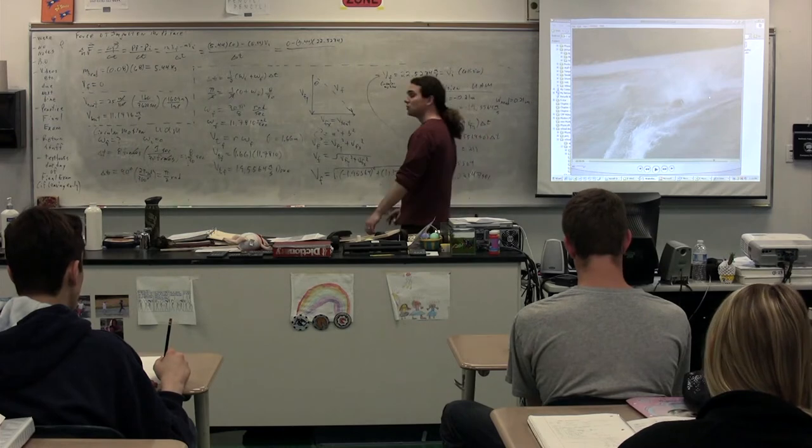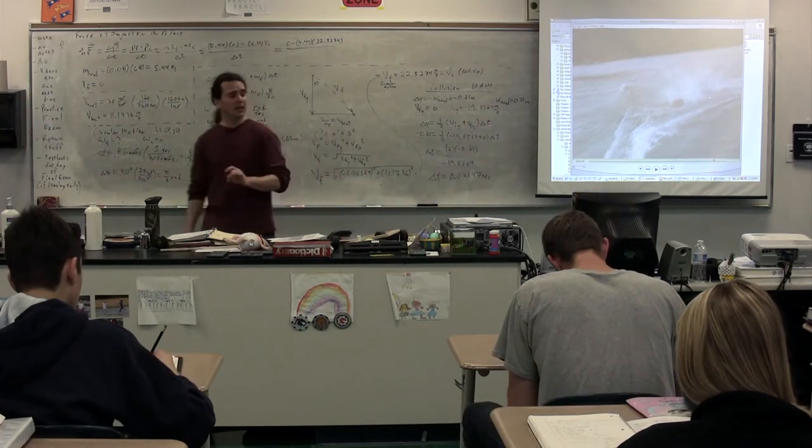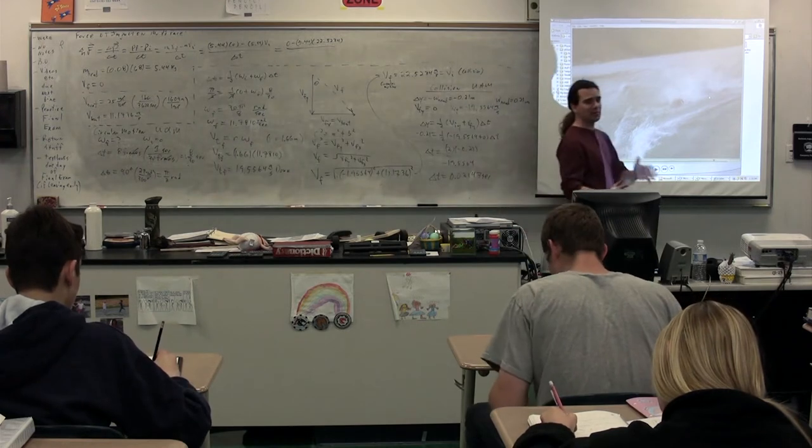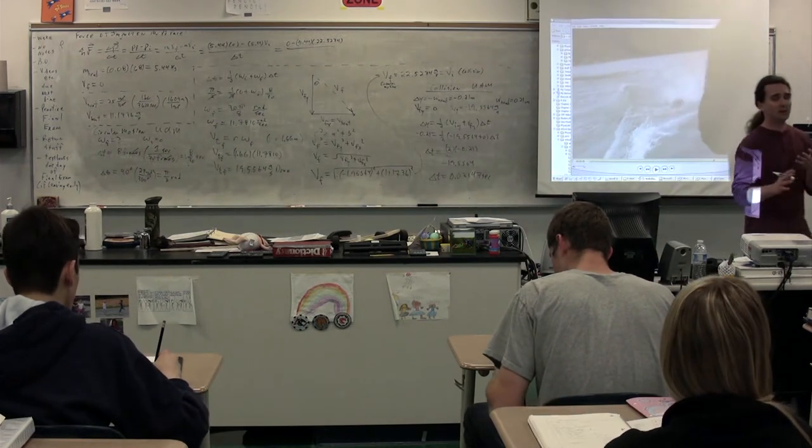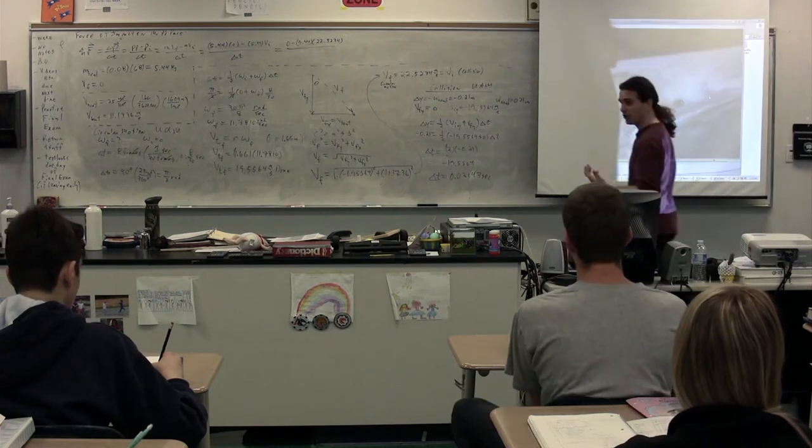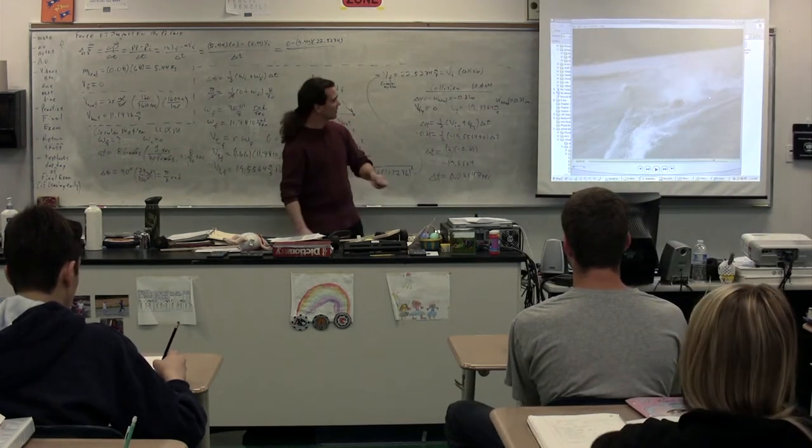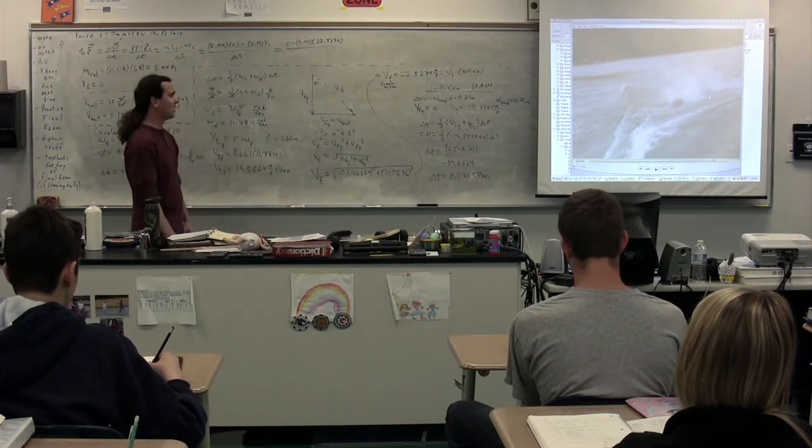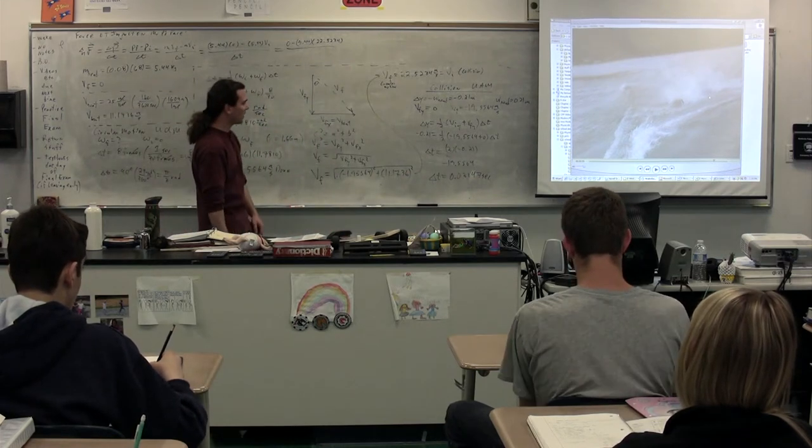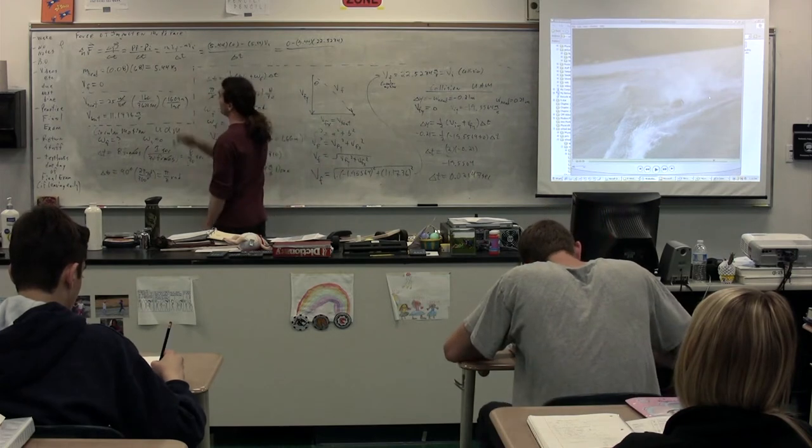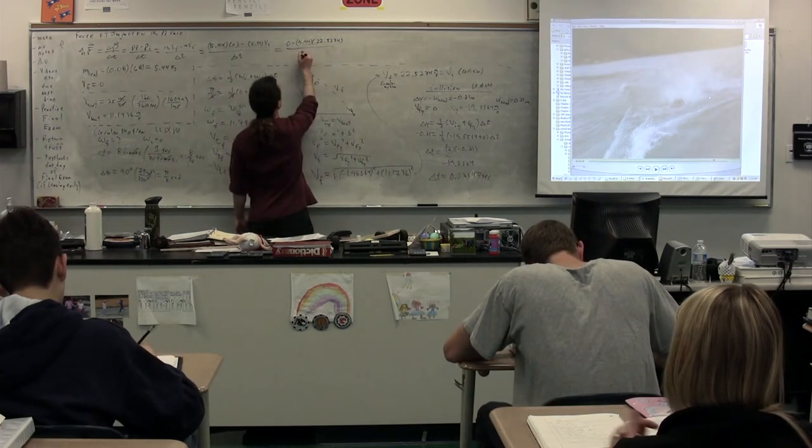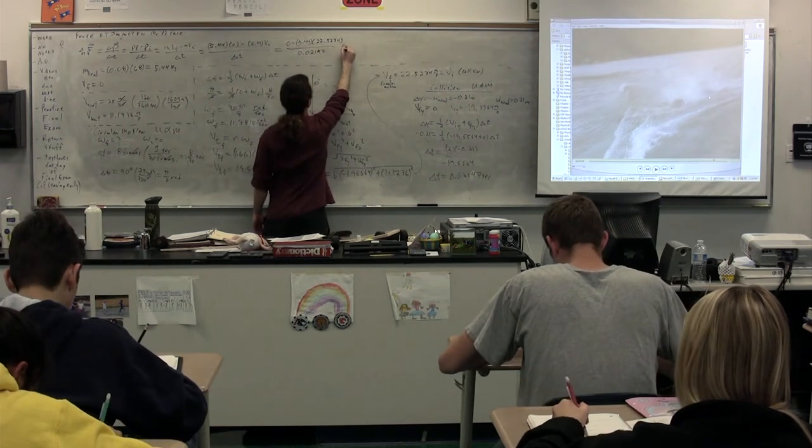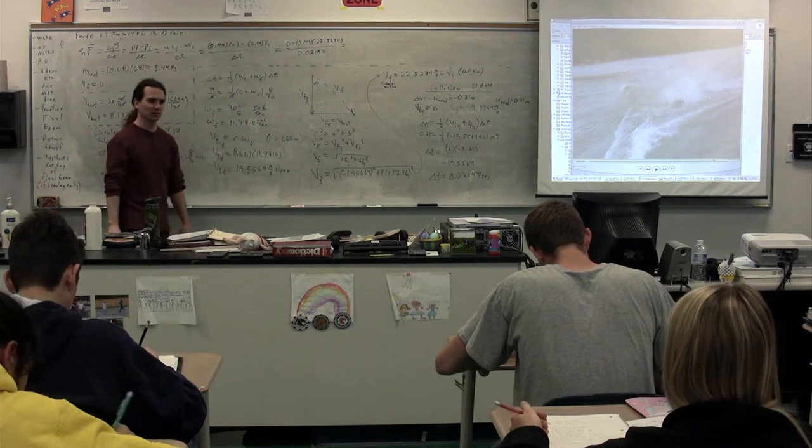So we estimated earlier that we could see from the video that the time of the collision actually was less than one-thirtieth of a second. One-thirtieth of a second would be 0.03 repeating seconds. So you can see that the time of the collision is clearly less than that, and now we have a much more accurate description of that time. So we can come back to our original equation for the net force of impact, and we can substitute in our 0.02147 seconds, and we can get the force of impact during the collision.